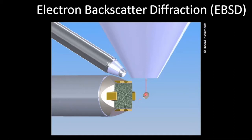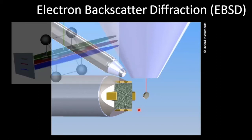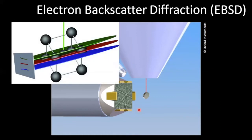The EBSD detector comes in perpendicular to the beam, so you actually have to angle your specimen at about 70 degrees in order to get an optimum signal on your EBSD detector. What that means is that the angle at which your beam is interacting with the different atoms within a structure changes, and we can actually detect that — we're talking about an electron beam interacting with the structure.